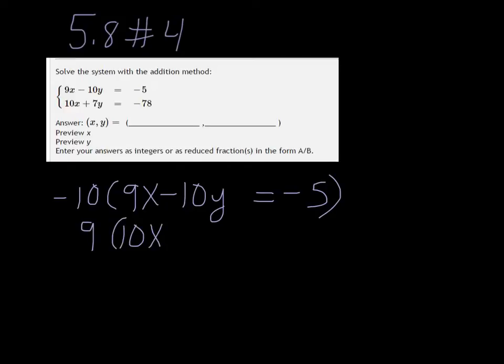And if you're thinking ahead a little bit, you'll see that the top row will be negative 90X, the bottom will be positive 90X. And of course when you add a number and its opposite together you get 0, and that's what we want.